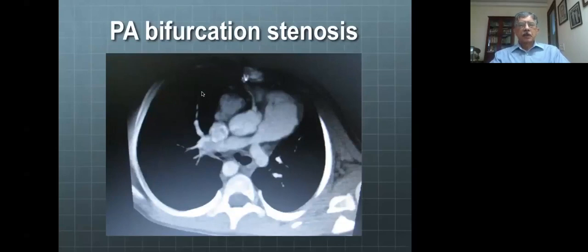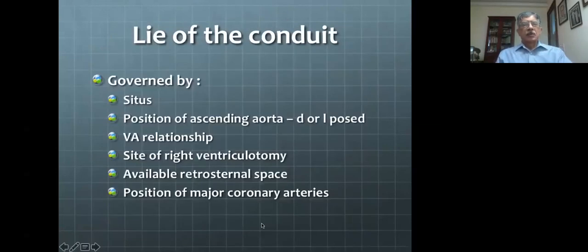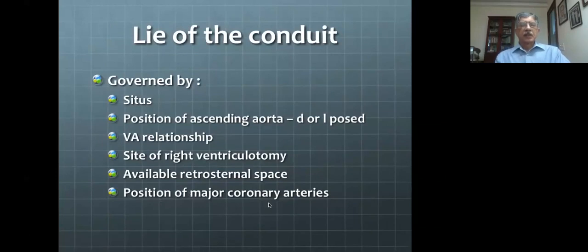When you place a large conduit into a small pulmonary artery, you can see that the conduit is big while the pulmonary artery is relatively small — and very soon a cloverleaf-type bifurcation stenosis can be produced. The lie of the conduit is governed by the situs of the heart, the position of the ascending aorta (whether D or L transposed), the ventricular arterial relationship, the site of the right ventriculotomy, the available retrosternal space, and the position of the major coronary arteries.